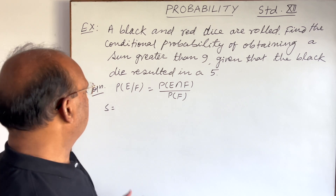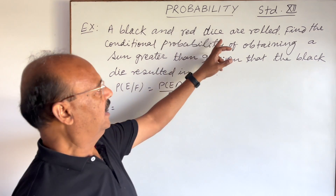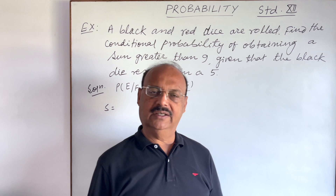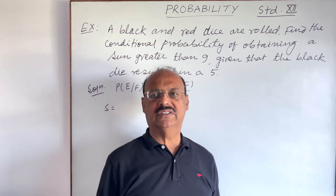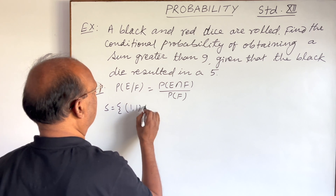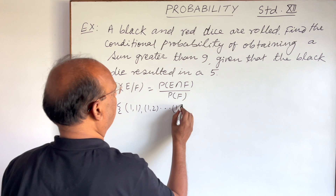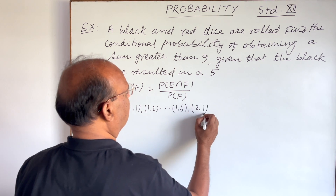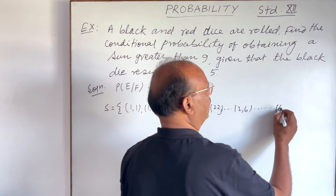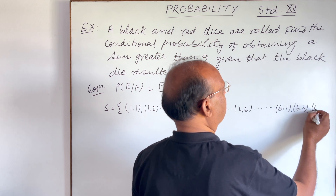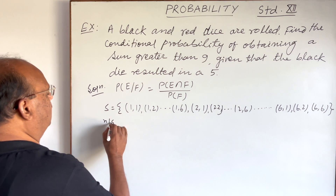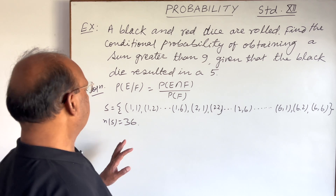First of all, let us find the value of the sample space. Since two dice are rolled, and one die has six faces numbered one through six, the other die also has six faces. So six into six gives thirty-six possible outcomes, ranging from (1,1), (1,2) up to (6,6). So n(S) = 36.